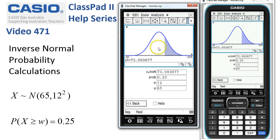You can see there is the right tail, the 25% area, and this point here on the scale is 73.09.